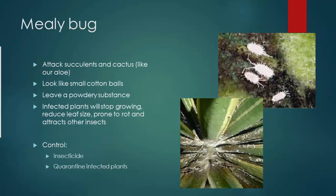A mealy bug — mealy bugs are one of the easier ones to spot because they have cotton ball shaped bodies. They'll leave a powdery substance that's usually white. It's important to be able to tell the difference between a mealy bug and powdery mildew. With mealy bug, you'll see the little tiny bugs; plants will stop growing, reduce in leaf size, and be prone to rot. A lot of times we have these problems in succulents and cacti, like our Thanksgiving cactus, aloe, and snake plants.